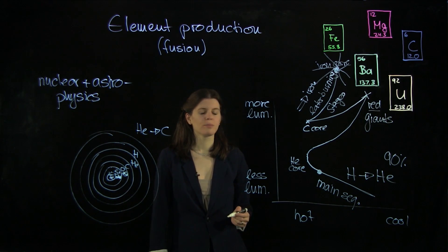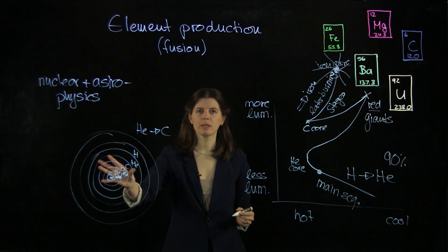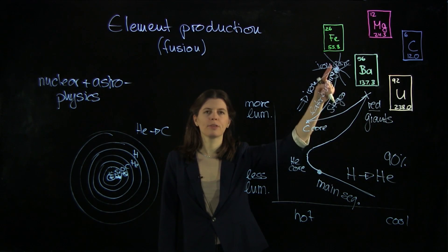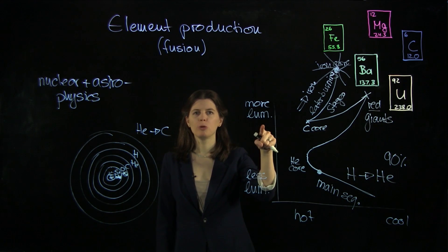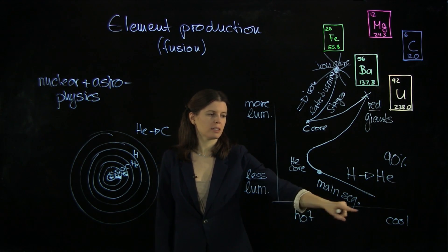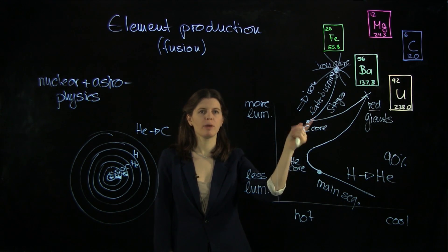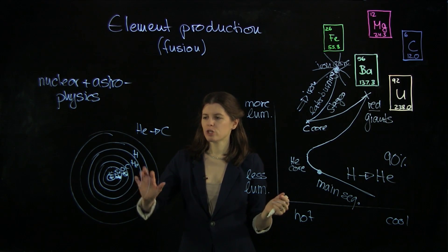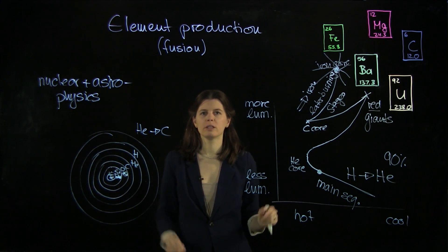So what you see here is that whatever is happening in the core has a direct impact of where the object sits on this diagram. By measuring the luminosity of a star as well as its temperature, we can place it on this diagram and then learn in which evolutionary state the star is currently in, which tells us what is going on in its core.